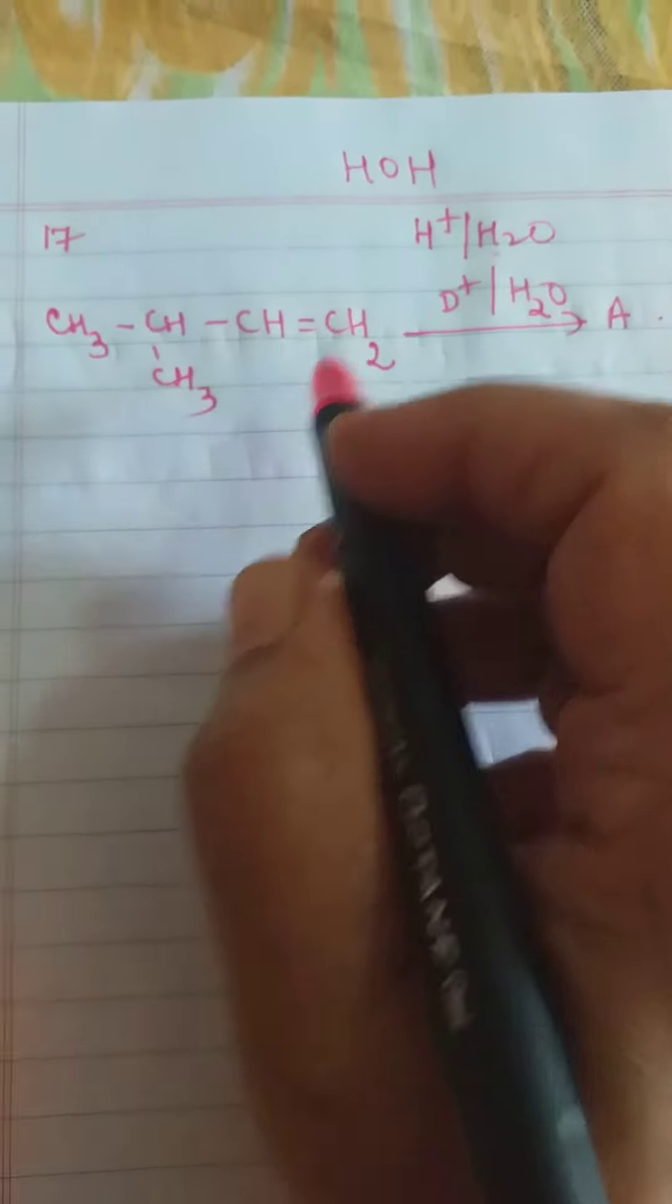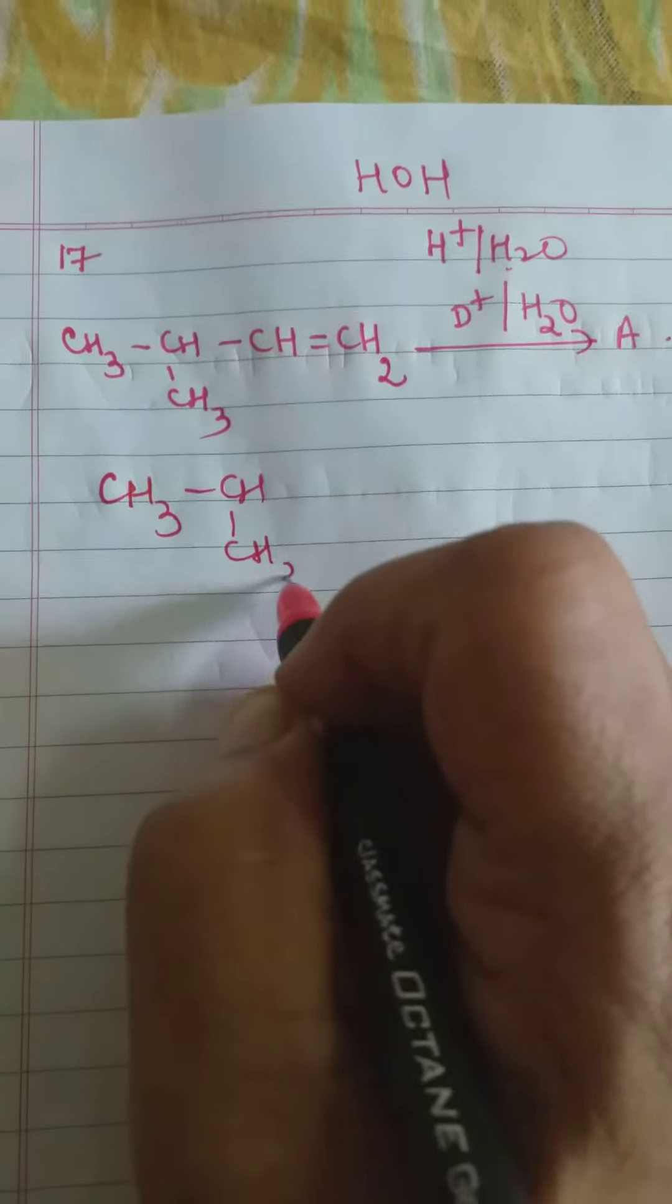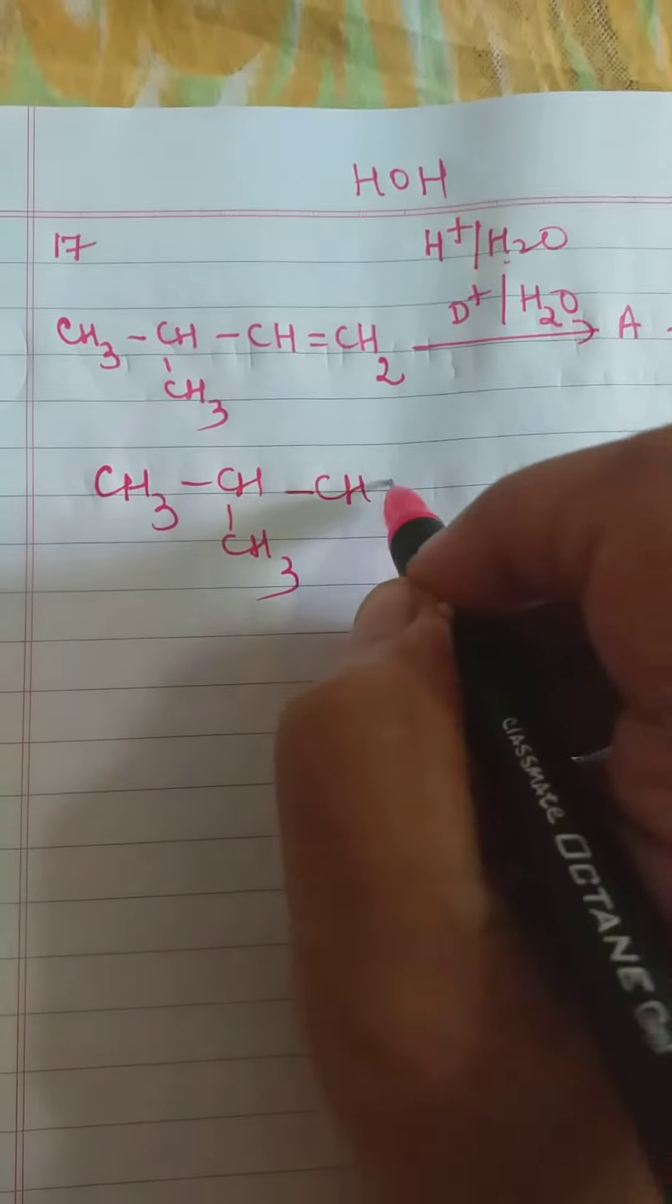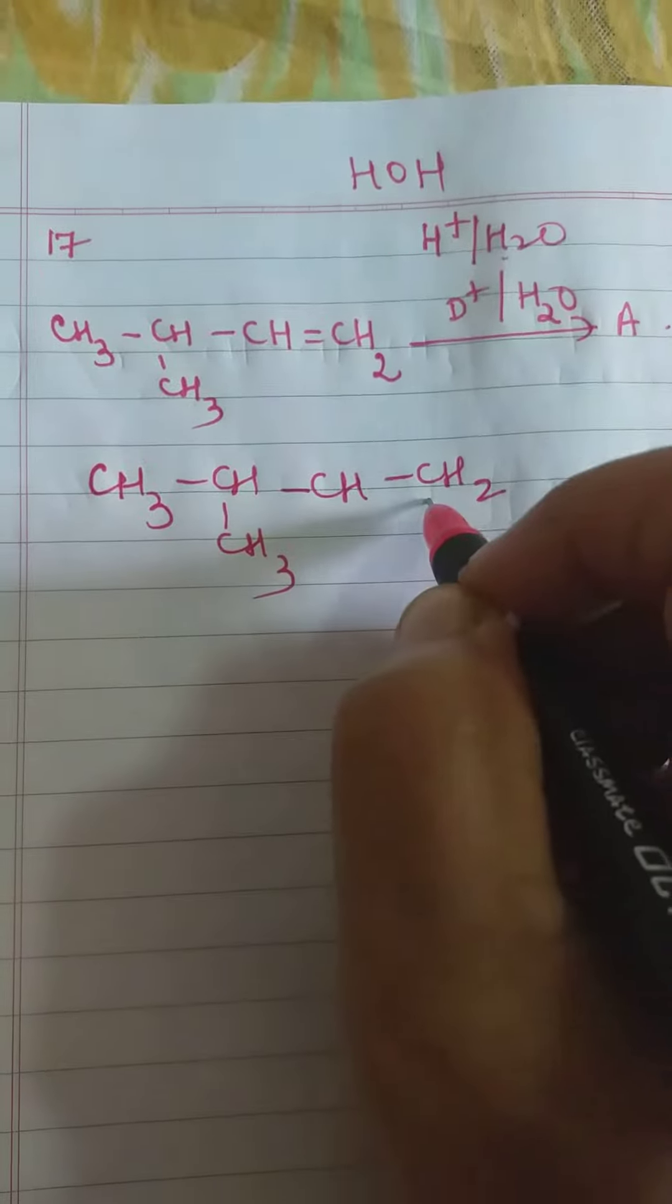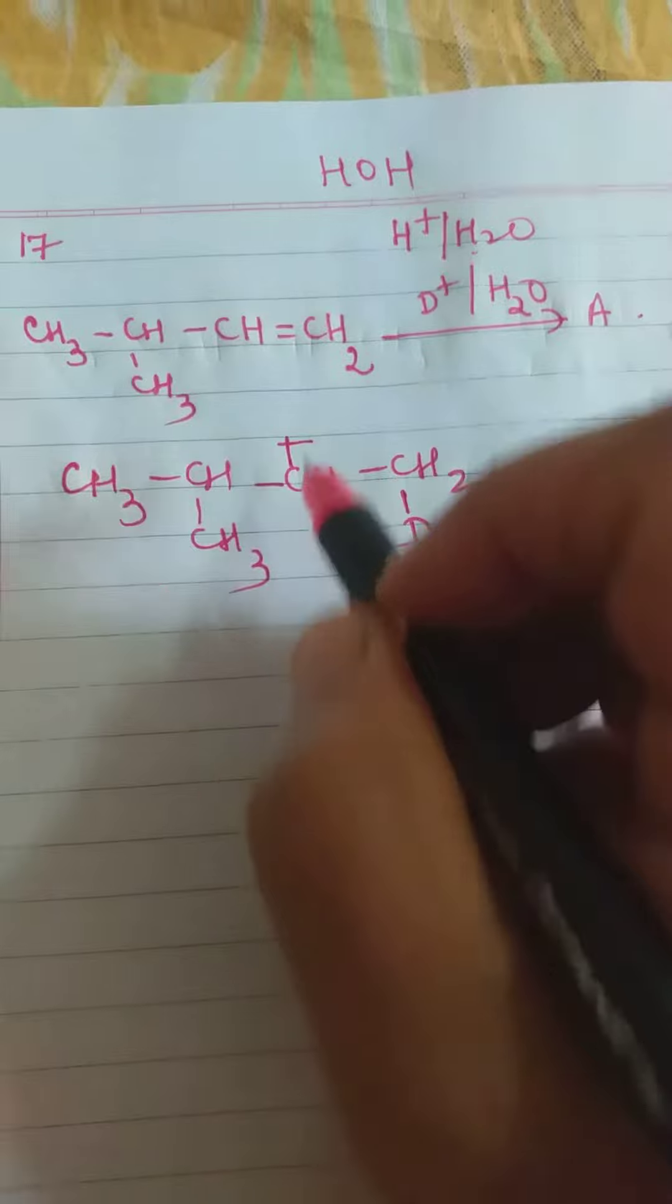So, obviously H will add here. CH3-CH-CH3, CH, and H will add here. That means here now what is going to add? D, and a carbocation is formed here.